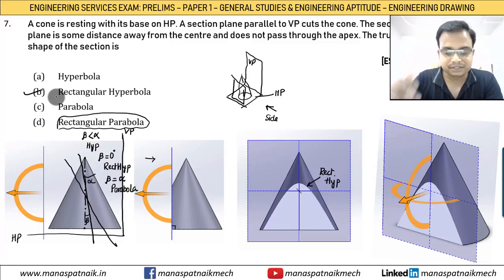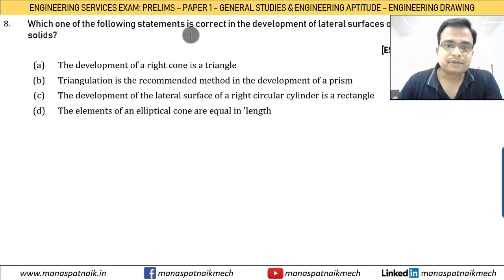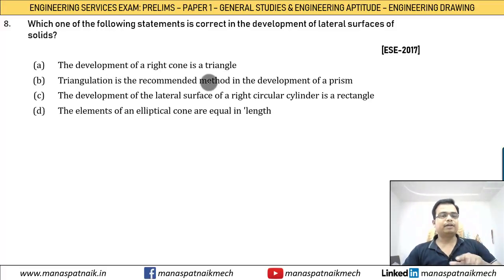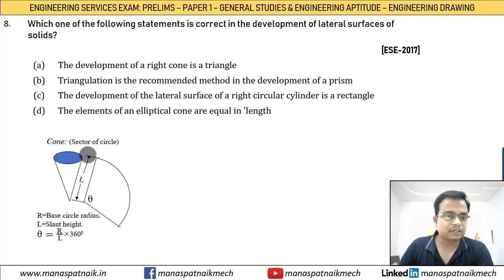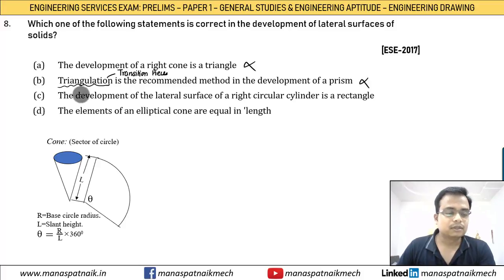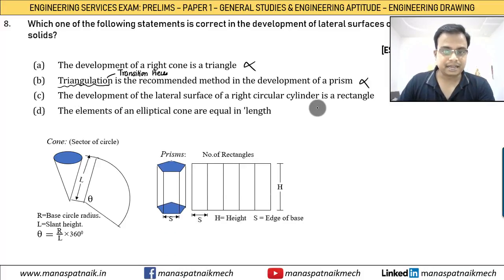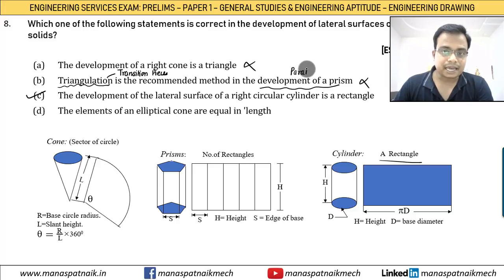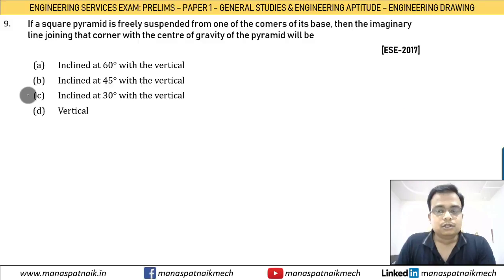Problem number eight: which statement about development of lateral surfaces is correct? The development of a right cone is not a triangle — it is a sector of a circle. Triangulation is the method for development of transition pieces, not prisms. The development of the lateral surface of a right circular cylinder is a rectangle — that is true. The correct option is C.